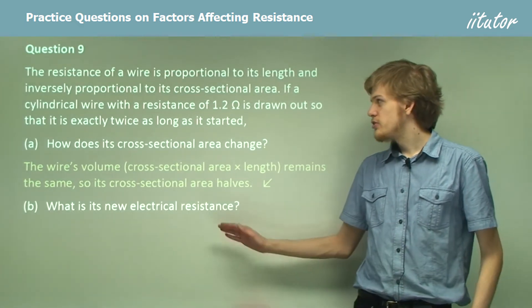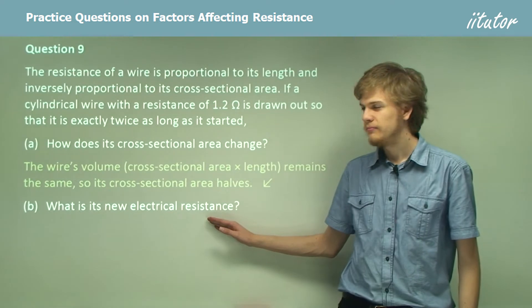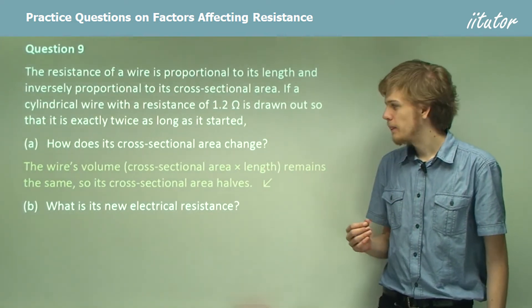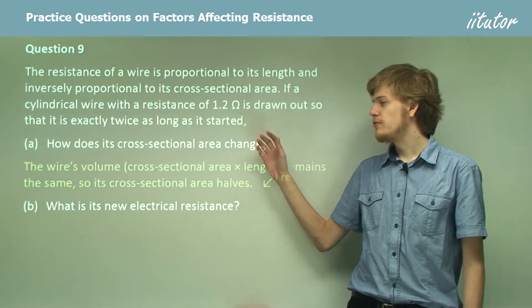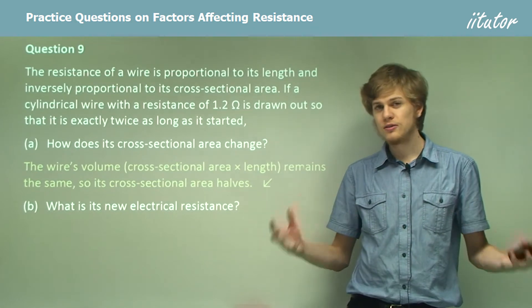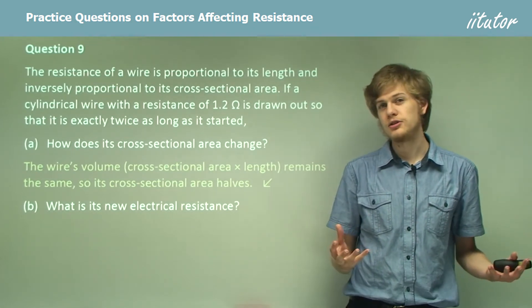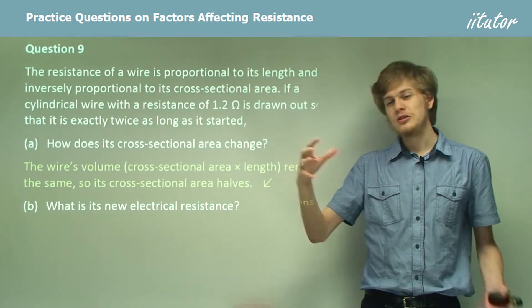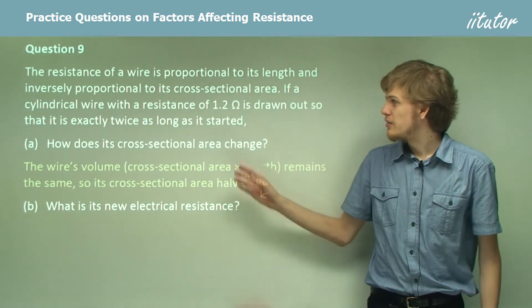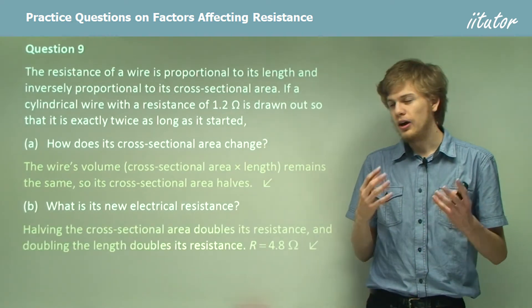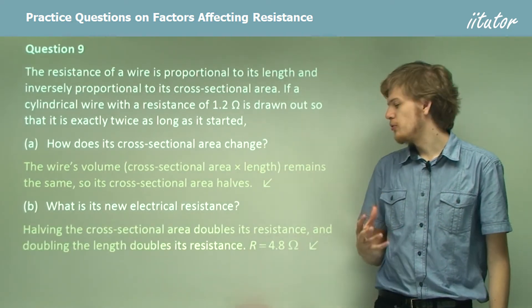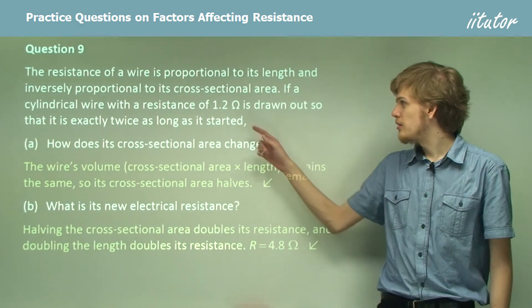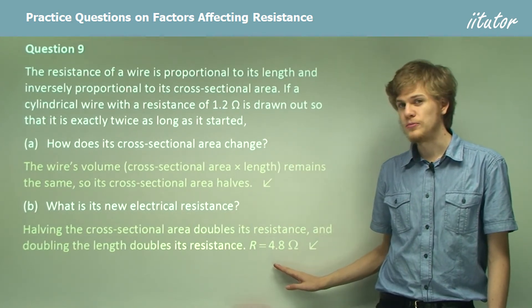Part B: what is its new electrical resistance? We've doubled the length and halved the cross-sectional area — both changes cause the resistance to double. Making the wire twice as long gives 2.4 ohms, and then halving the cross-sectional area doubles it again. So the new resistance is 4.8 ohms.